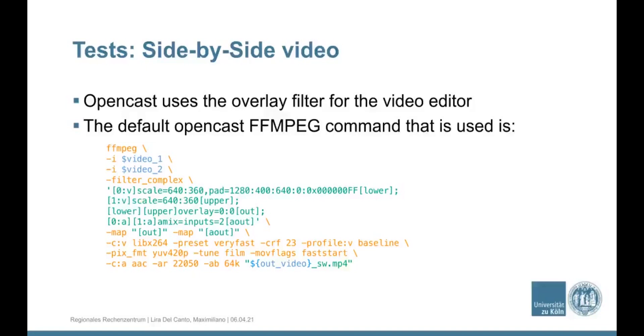First, we have the two videos and we made a filter complex, that the first video is resized to 640 by 360. And we create a padding. This padding is to create a space besides another video so we can add the second video. Here we are resizing the second video and then we made the overlay one over the another. Finally, we made the mix of the audio and then we re-encoded the video. That is the traditional way to do that.